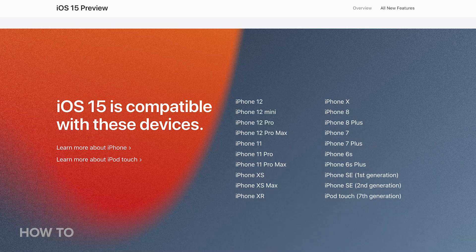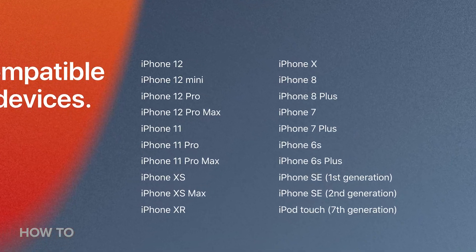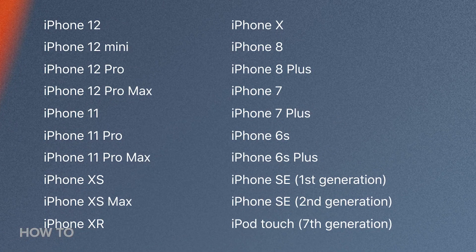First things first, you want to check to see if your device is compatible. Apple says the iPhone 6S and iPhone SE are the oldest devices that you can install iOS 15 public beta on, but double check just to be sure.